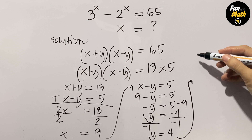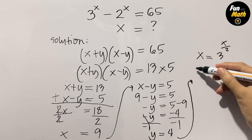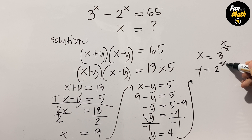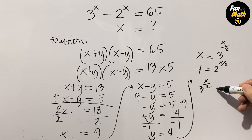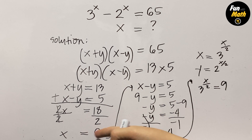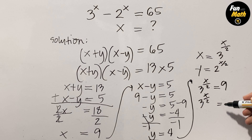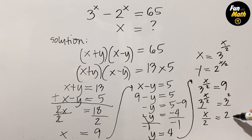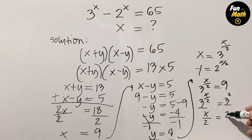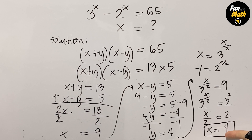Recall that x was defined as 3 to the power of x over 2, and y was defined as 2 to the power of x over 2. We are going to use either of the two. So 3 to the power of x over 2 equals 9. We write 9 in terms of 3, so that is 3 squared. Now that they have the same base, we can equate x over 2 equals 2, and cross multiplying gives x is equal to 4. So the value of x is equal to 4.